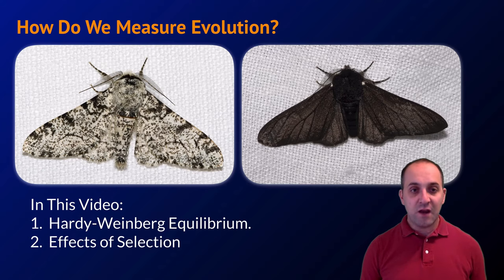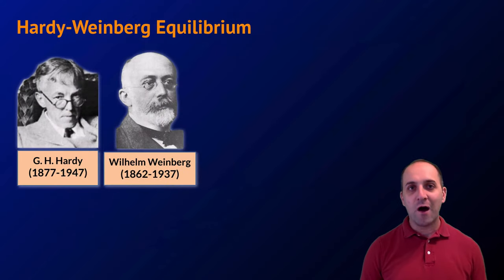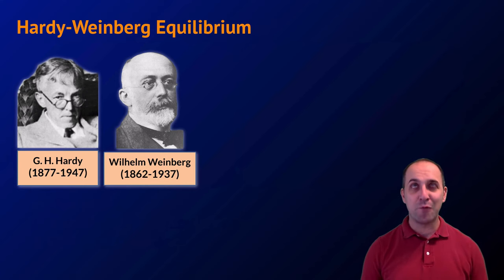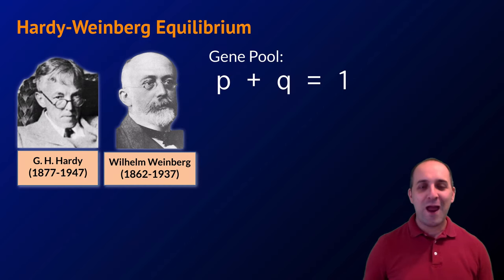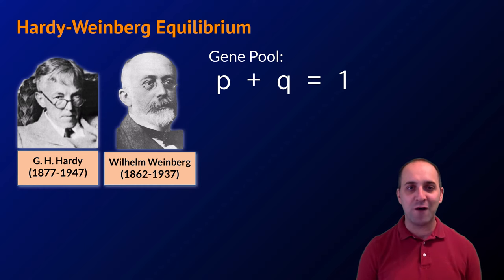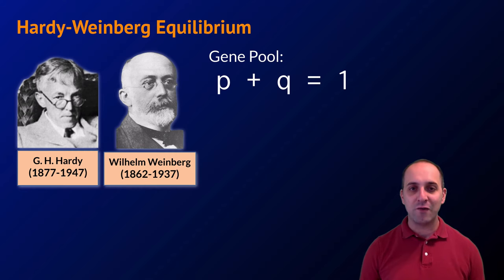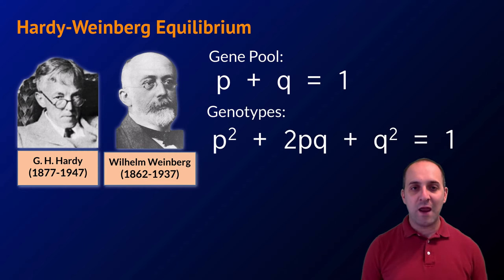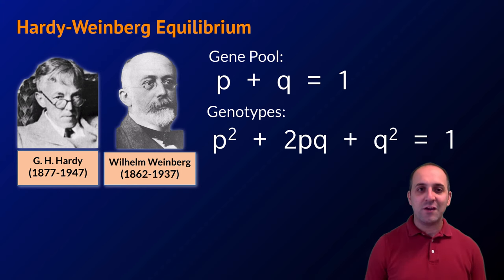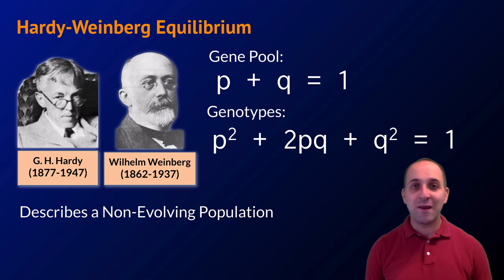Hardy and Weinberg came up with these notions independently but contemporarily. These are equations that describe allele frequencies in a hypothetical non-evolving population. For the gene pool, the frequency of the recessive and dominant alleles added together has to equal one. In the population, the frequency of the three types of genotypes added together also has to equal one.